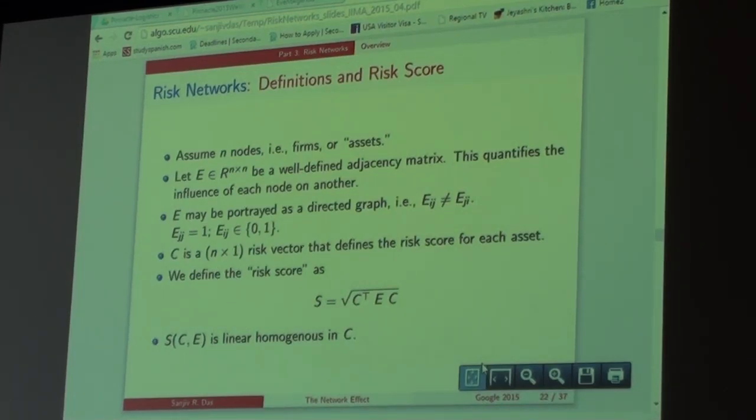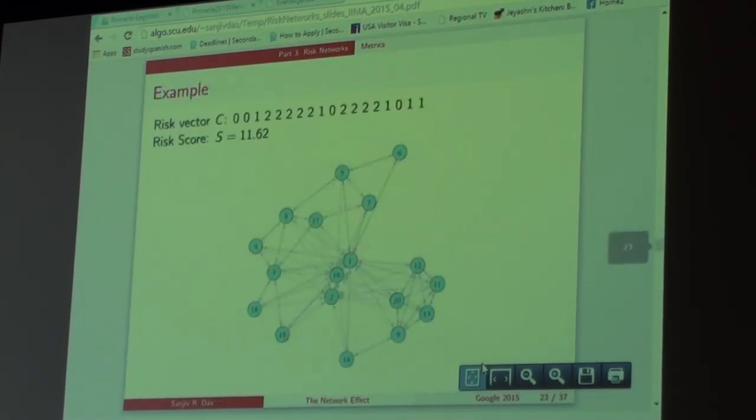And then C is a compromise matrix. It just says what's the credit rating and how healthy the bank is. And we can put that all together, we compute that one number, S, which is the square root of this matrix calculation. But the nice thing about that S is, it allows us to do a lot of nice mathematics.